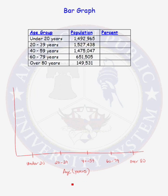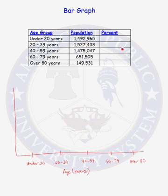Now we have to decide whether we want to report counts — the actual number, the actual population in each age category — or whether we want to report the percentage. Do we want to report the percent of people under 20 years of age, the percent of people between 20 and 39? Because these numbers are so large, let's go ahead and report the percent. So we first need to calculate those percentages.